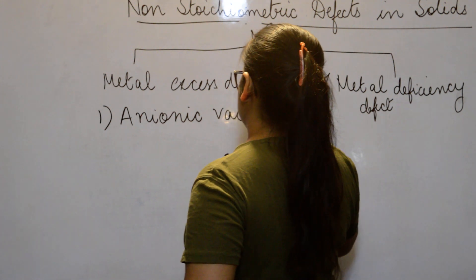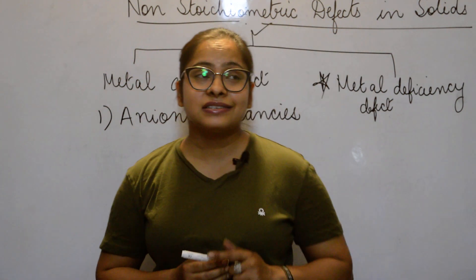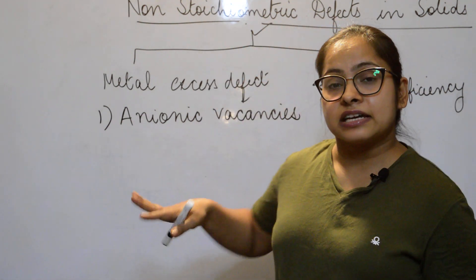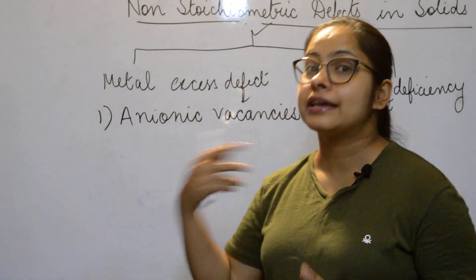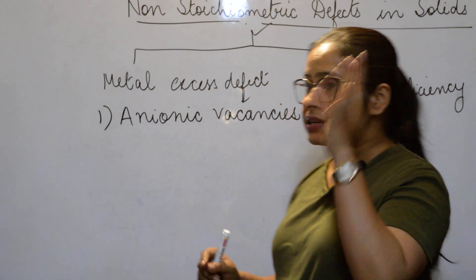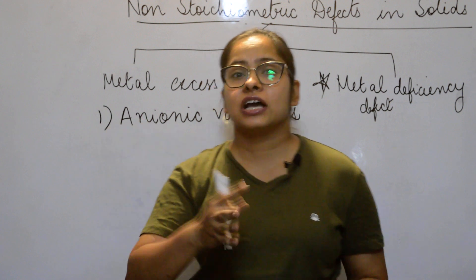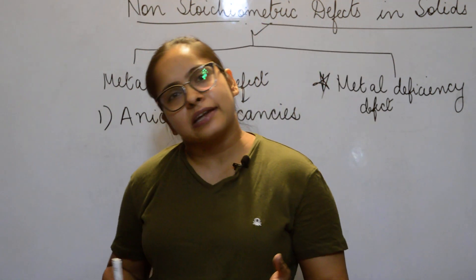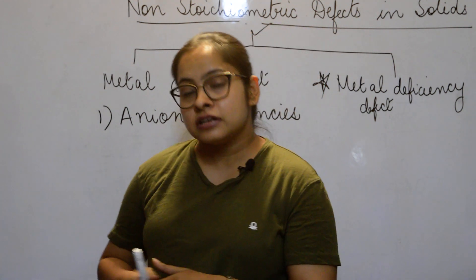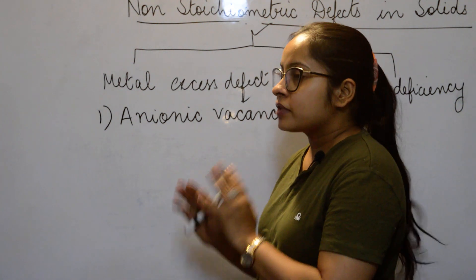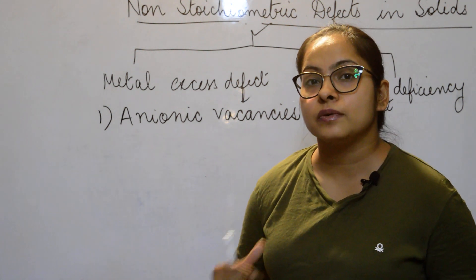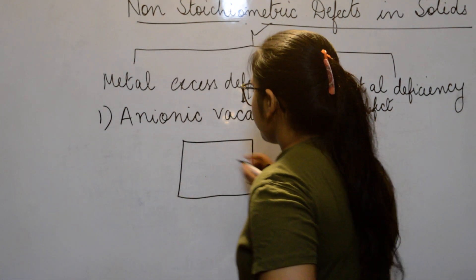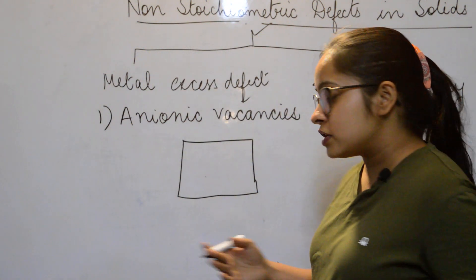Anionic vacancy — vacancy means shortage or lack. So at a particular place in a crystal, the anion goes missing and a vacancy is created, which is why we term it an anionic vacancy. A very classic example is sodium chloride crystal — a nearly perfect crystal. Let me draw a small structure to explain how this anionic vacancy is created.